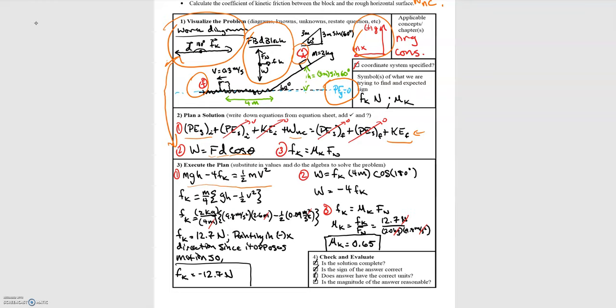So now that we've identified the work done by friction, which is the work done by non-conservative forces, we can substitute that into our energy equation. And we can come down and we can solve for the frictional force that's acting. Once we find the frictional force, then we can determine what the coefficient of friction is on that surface.